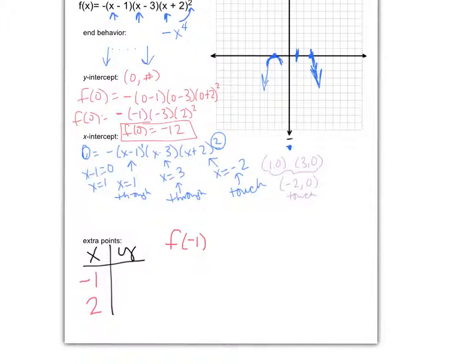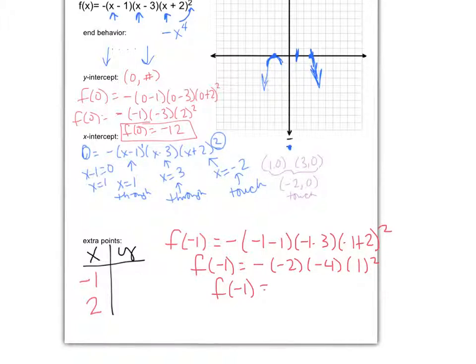So we have a negative 1 goes in place of all of the x's. So a negative, negative 1 minus 1 times negative 1 minus 3 times negative 1 plus 2, the quantity squared, and solve for that. So f of negative 1 here is going to be a negative times negative 2 times negative 4 times a 1 squared. So we know that f of negative 1 is going to be 8. 4 times 2 is 8, and then negative sign, so I get a negative 8. So we now have the point negative 1, negative 8.